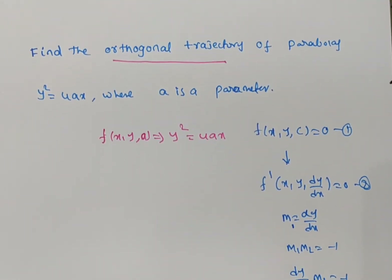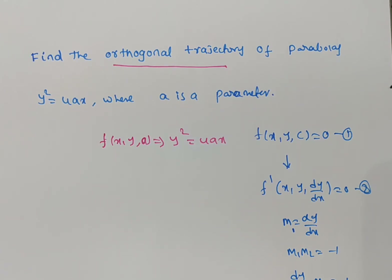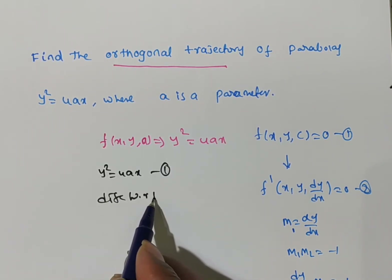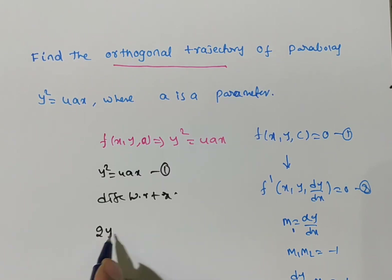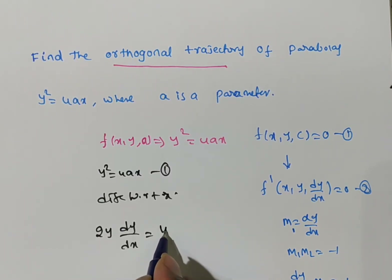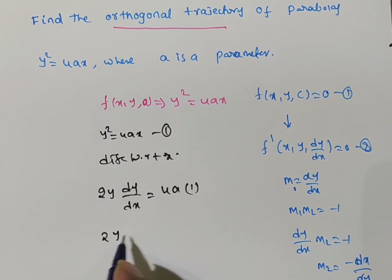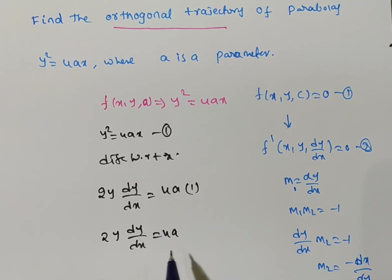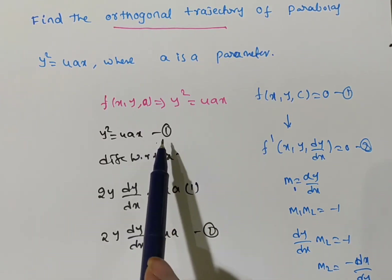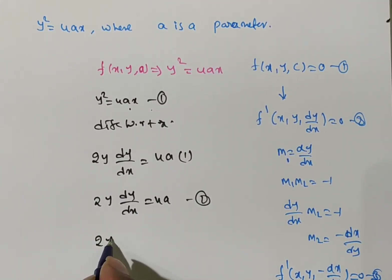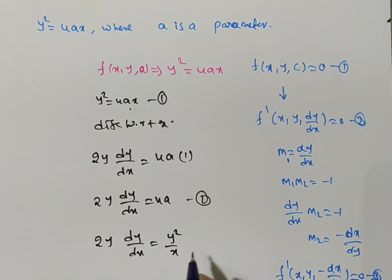Now applying this to the given problem: y² = 4ax, where a is a parameter. Differentiating with respect to x gives 2y(dy/dx) = 4a. The parameter a is not yet eliminated, so from equation 1 we can write 4a = y²/x. Substituting, we get 2y(dy/dx) = y²/x. This is the differential equation of the family, with the parameter eliminated.